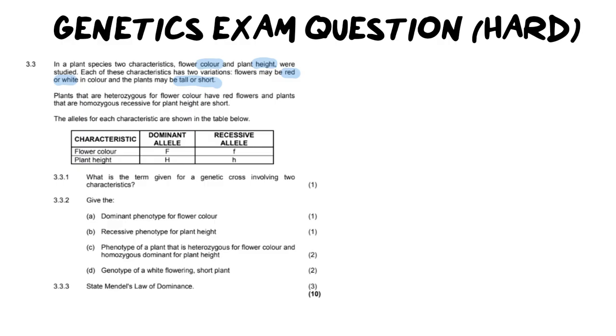It then goes on to speak about the fact that plants that are heterozygous, which means a big letter and a small letter for the flower color have red flowers, whereas plants that are homozygous recessive for plant height are short. They've given you this statement so that you can figure out is red the dominant color or white, is short or tall the dominant. We're going to come back to that once we've looked at the table.